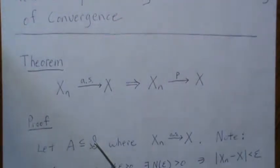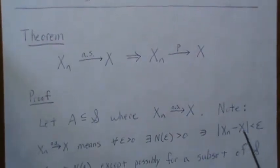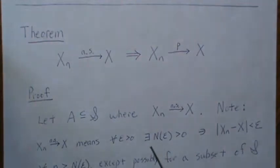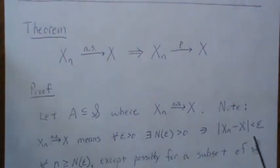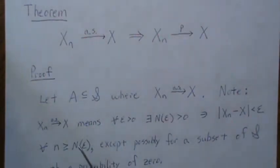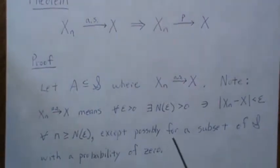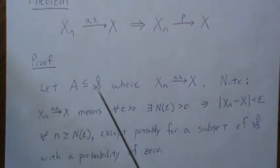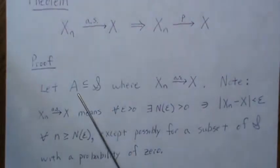except for maybe elements that have a probability of zero happening. So note that if we converge almost surely for points in A, it means that there's an epsilon greater than zero and there exists an N, which can be a function of that epsilon, such that this difference is very small - less than epsilon - and this is for all N greater than cap N. Note that it's except for a possibility of a subset of S with probability zero, so there may be an occasional point that has probability zero that's not in here.